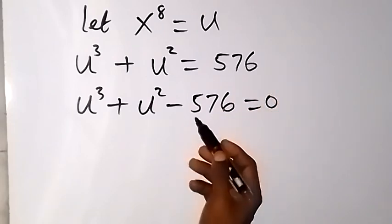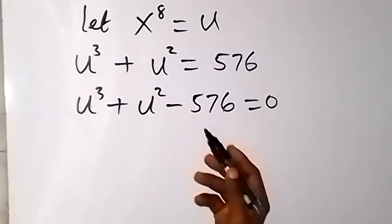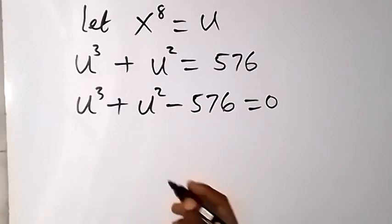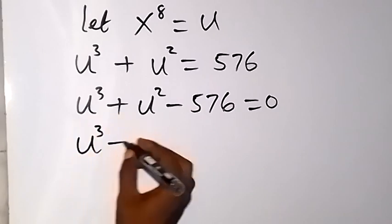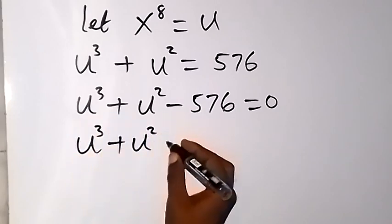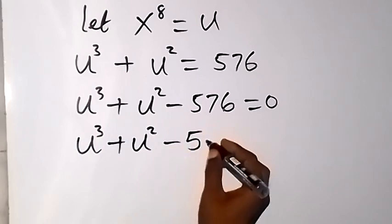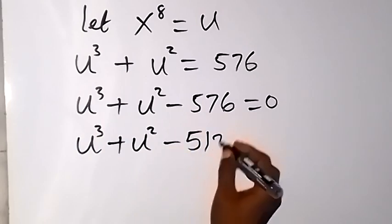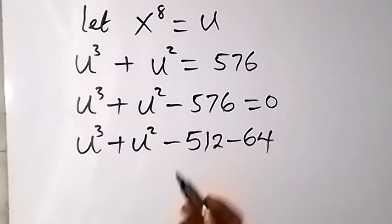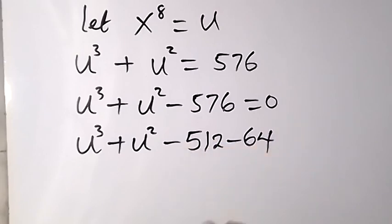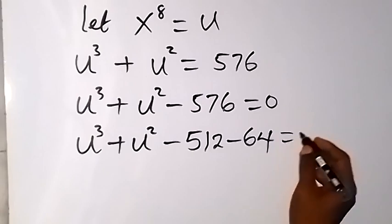From here we can form an equation by bringing 576 to this side, and it will become minus. So we have u raised to power 3 plus u squared minus 576 is equal to 0. We can separate minus 576 as minus 512 minus 64, which still gives us minus 576, equal to 0.